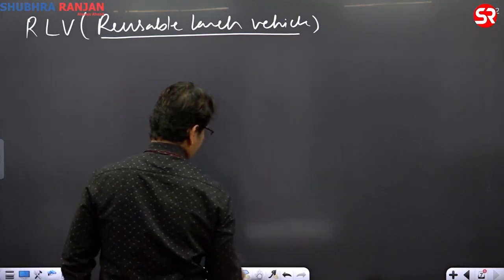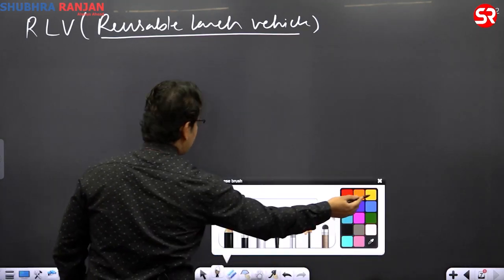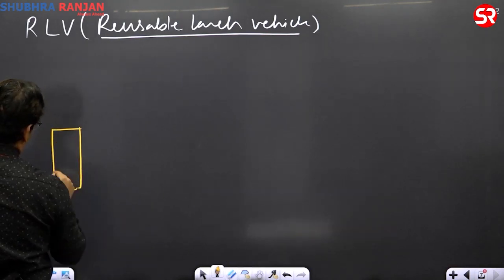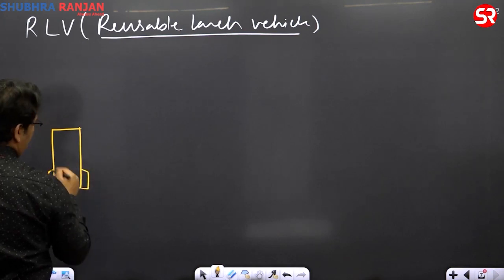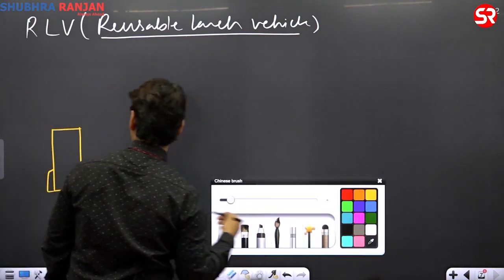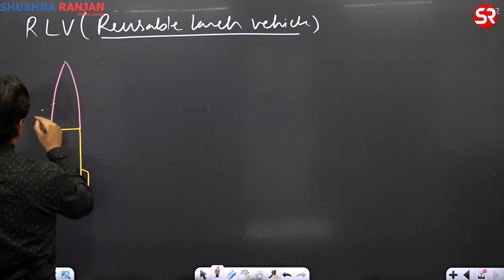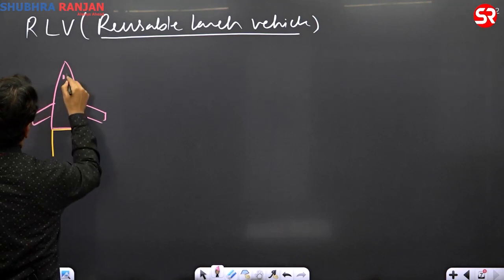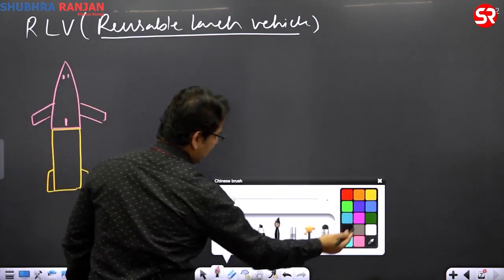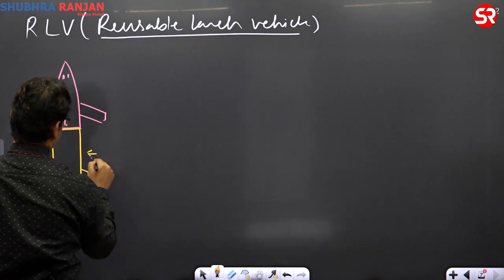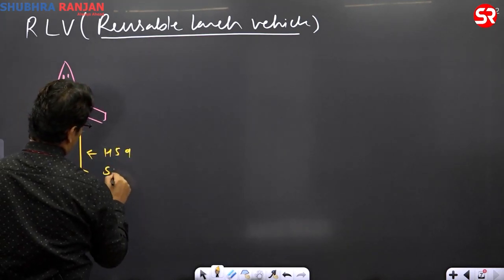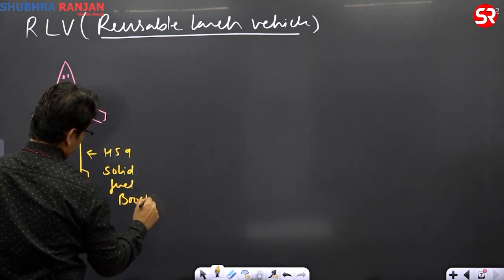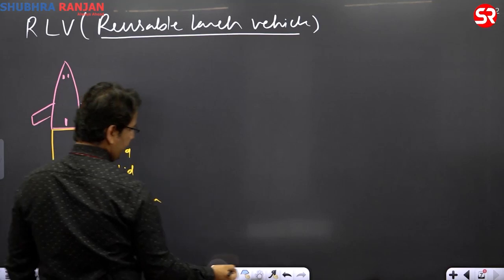So the system is like this. This will be like a booster. And above, on this booster, there will be RLV. So RLV will be like proper aircraft. This is your HS9 booster, HS9 solid fuel booster. And this is your RLV.